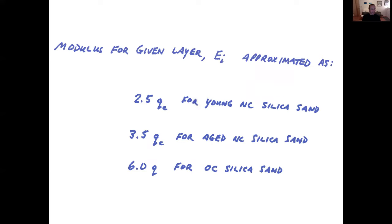The modulus for a given layer is approximated as 2.5 QC if it is young, normally consolidated silica sand, 3.5 QC for aged, normally consolidated silica sand, 6.0 QC for over consolidated silica sand. And this is available through the literature. So these are what has been presented and you can use these as guidelines for extending to other sand types.